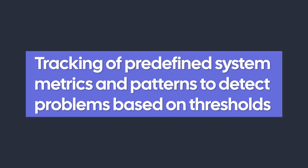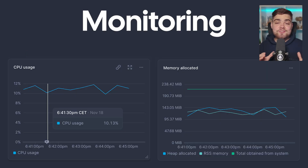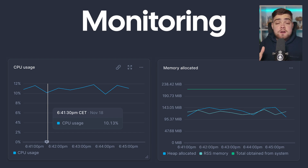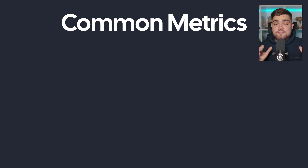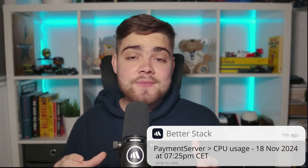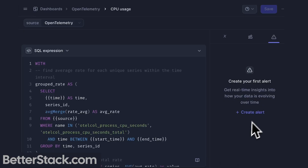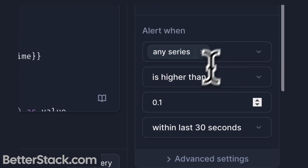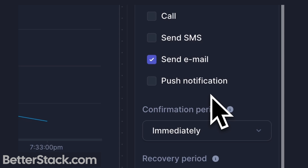Monitoring is the practice of continuously tracking system health by comparing key metrics against predefined thresholds. You most commonly see these on dashboards with visual graphs displaying the data in a human-readable way. Some examples of metrics you would monitor are infrastructure metrics like CPU and memory usage, or application performance metrics like server response times. When these metrics cross certain thresholds or match a pattern indicative of a problem, an alert will get triggered — so a basic one would be: if CPU usage of my server crosses 80%, warn me.